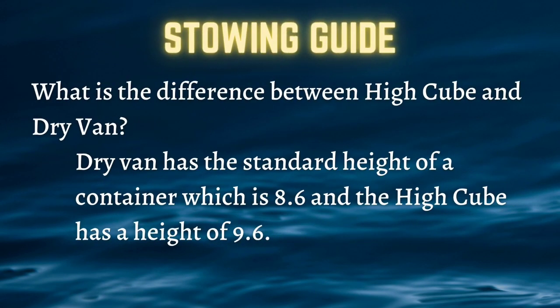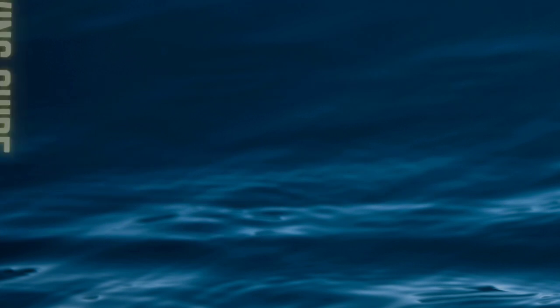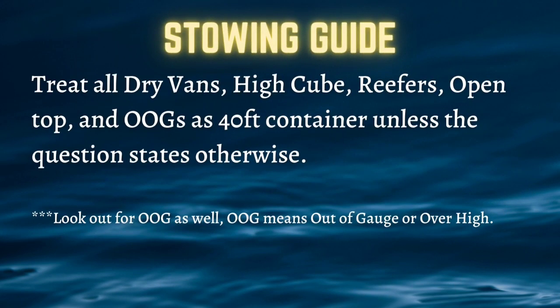What is the difference between the high cube and dry van containers? The dry van has a standard height of 8.6 feet, which is the regular height for a container. The high cube container has a height of 9.6 feet, which is higher than normal, so it must be treated differently when stowing. Treat all your containers as 40-foot containers unless the question specifies that it's a 20-foot — everything is 40-foot.